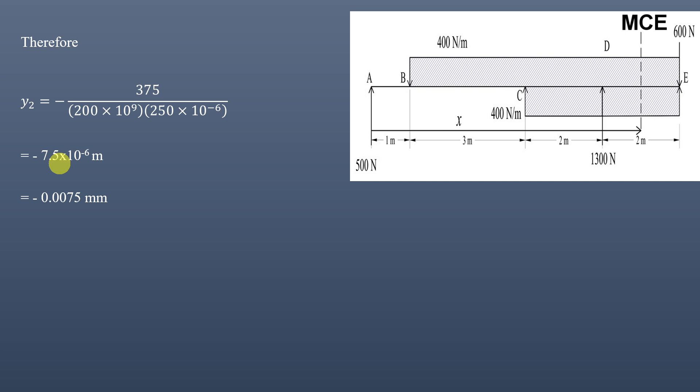So this is how you use Macaulay's method to calculate the deflection at any point in a beam. You write one single bending moment equation valid throughout the length of the beam, but before writing the equation you sometimes need to make adjustments to the loading so that one single equation can be written using one variable. I hope this solution was clear. I will solve more questions on Macaulay's method. If you found this video helpful, please subscribe to my channel, share the video, and stay tuned.